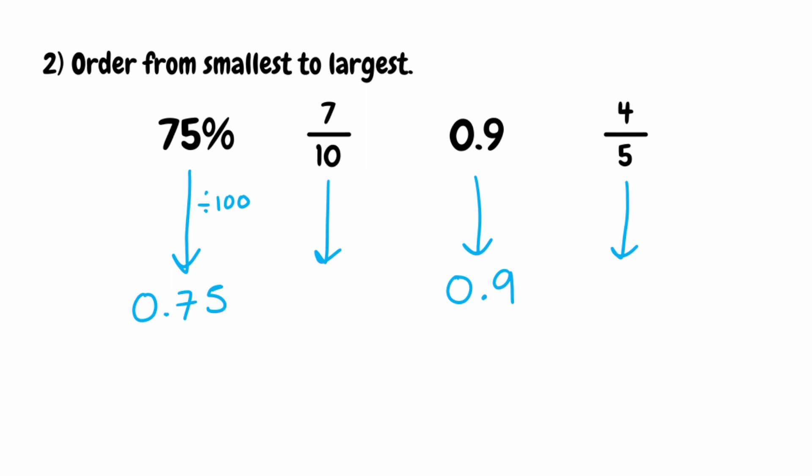We've then got 7 tenths. We may know the unit fraction of 1 tenth as a decimal, and then use that to find 7 tenths. Or we can simply do the division — 7 divided by 10. Because we're dividing by 10, all the digits move one place to the right, giving us 0.7.